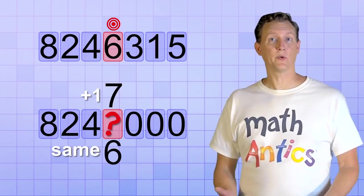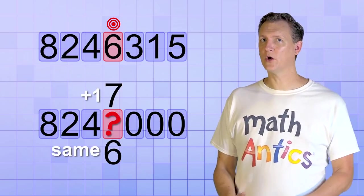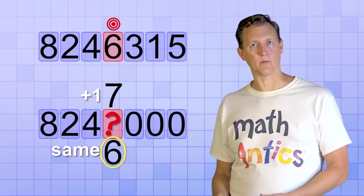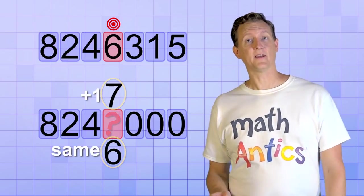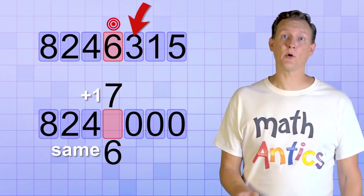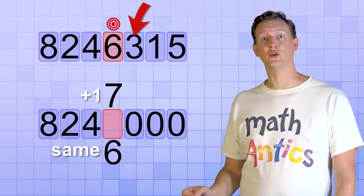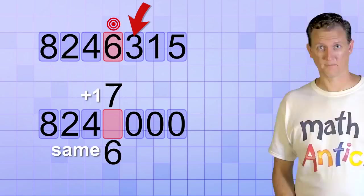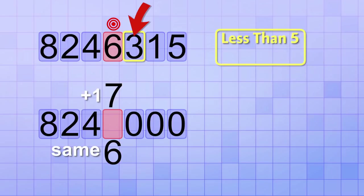Alright, but how do we decide which to do? How do we know if we keep the target digit the same, or increase it by one? The key is to look at the digit in the next smaller number place, the digit that's just to the right of the target digit. If that digit is less than 5, in other words, if it's a 0, 1, 2, 3, or 4, then we'll leave the target digit the same in the rounded version.